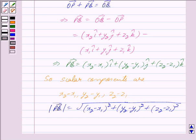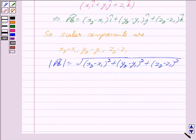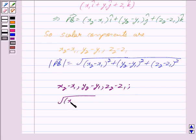So we have found the scalar components of the vector joining points P and Q. Hence the scalar components are x2 minus x1, y2 minus y1, z2 minus z1, and the magnitude of vector PQ is the square root of (x2 minus x1) squared plus (y2 minus y1) squared plus (z2 minus z1) squared.